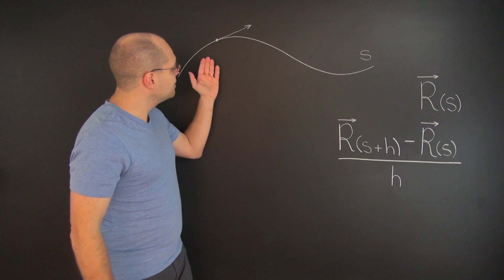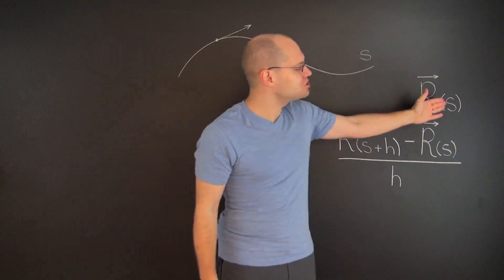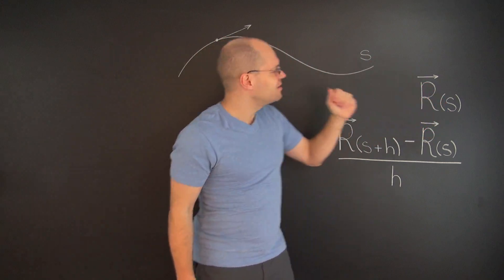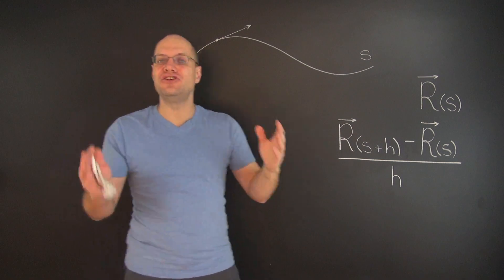We will now show that if a curve is parameterized by its arc length, then the corresponding tangent vector is unit length.